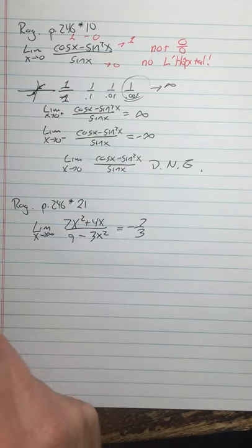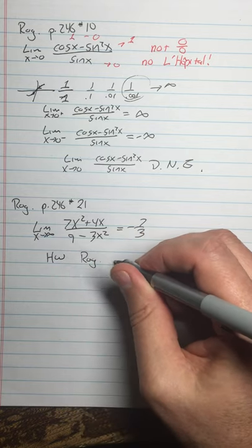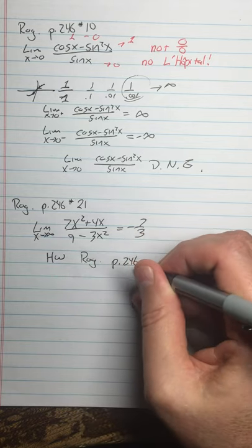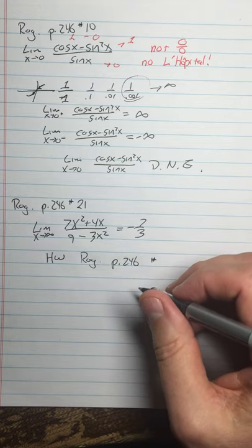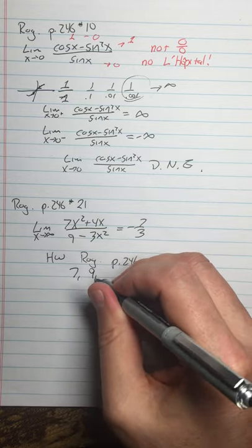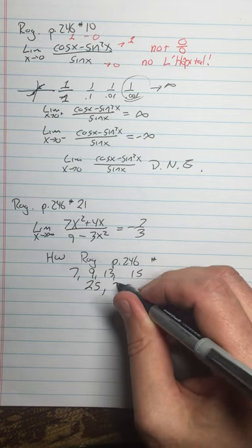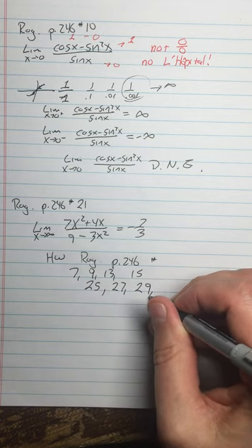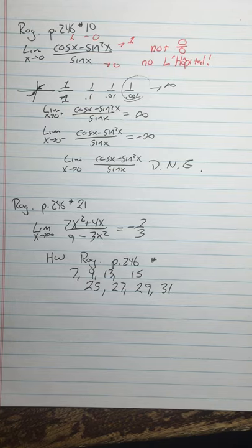So your homework on this is going to be Rogowski, page 246, which I'm attaching here. Number 7, 9, 13, 15. I could say 25 through 31 odd, but I just kept with writing them out. 25, 27, 29, 31. That's what it is. That's your homework assignment. And next, we're going to clean off another small topic. We're going to clean off another small topic, which is inverse functions, next.